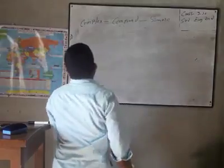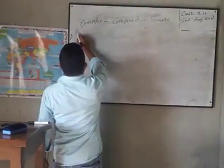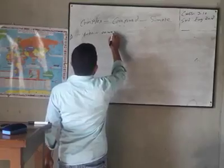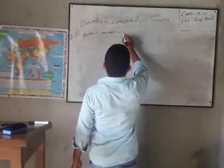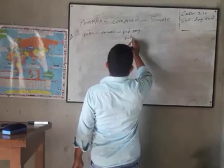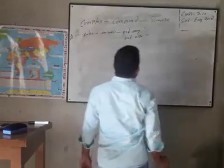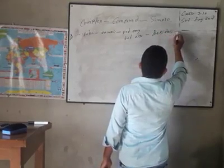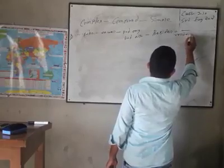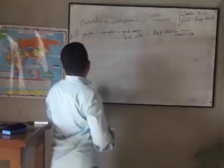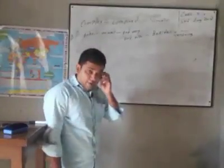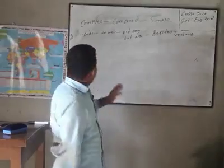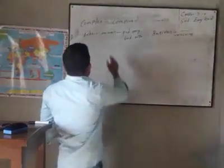Now we will write Structure Two. In compound you use 'not only... but also,' and in simple you use 'besides plus verb plus -ing.' In complex sentence you will find '... who ... as well.' That means first you use the subject, then 'who,' and then at last 'as well.' In compound sentence you use 'not only... but also.' And if you want to make a simple sentence, you use 'besides plus verb plus -ing.'